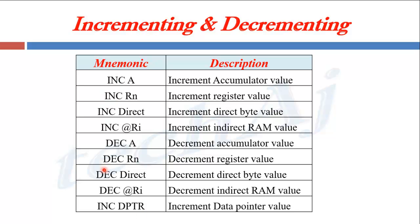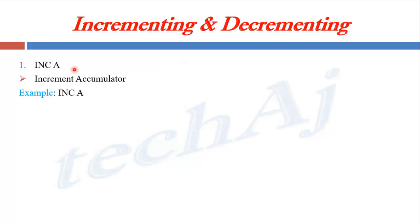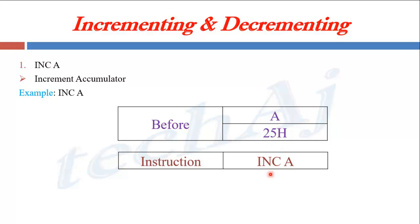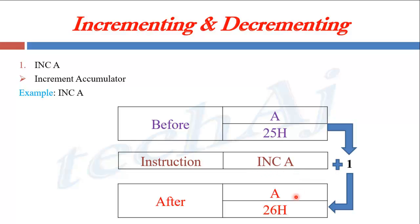Let us see all these instructions one by one with examples. The first instruction is INC A. This instruction will increment the value of the accumulator by one. Suppose initially the accumulator has the value 25H. When we execute INC A, the value of the accumulator will be incremented by one, so after execution the accumulator will hold 26H.